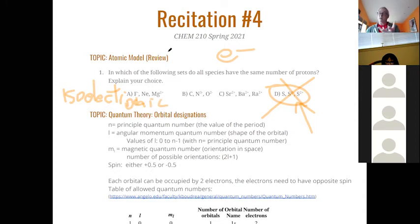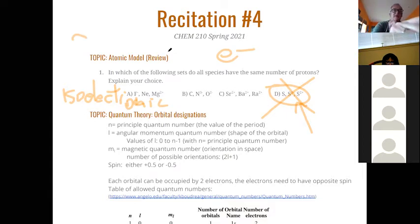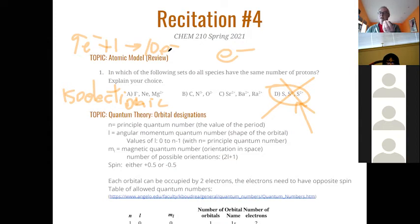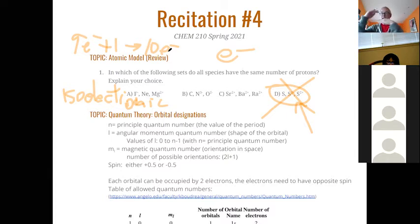What do we call electrons in the outermost shell? Valence electrons — those are the electrons in the outermost shell, basically the outermost shell that isn't completely filled. Fluorine has seven valence electrons — it needs only one more to achieve the completely filled shell. On the other hand, sodium has one electron in 3s — the simplest way for sodium to get a stable configuration is to lose that one electron, and then it looks like neon.